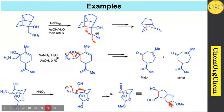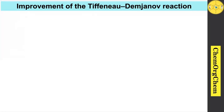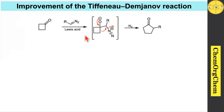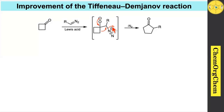Next we move on to improvement of the Tiffano-Temchanow rearrangement. Significant effort has been paid to developing and improving this reaction. When you take a ketone which reacts with a diazo compound in the presence of a Lewis acid, it quickly produces an intermediate that is similar to the Tiffano-Temchanow reaction intermediate. When you get this type of intermediate, the negative charge migrates towards this carbon center, followed by ring expansion — this carbon-carbon bond migrates to this center while nitrogen gas is expelled — which produces the ring-expanded ketone as a product.